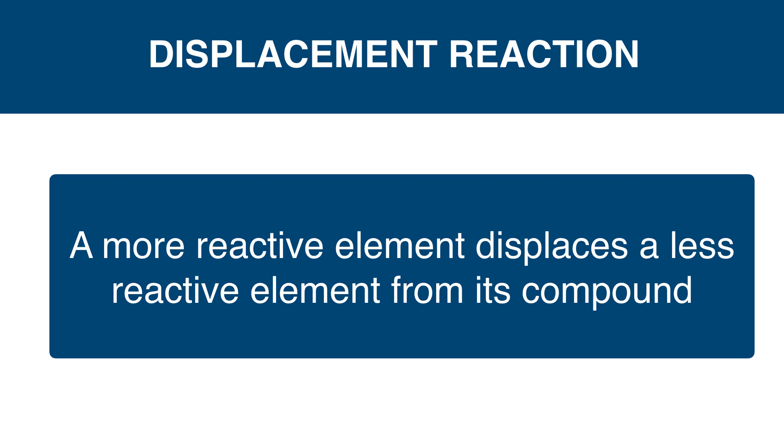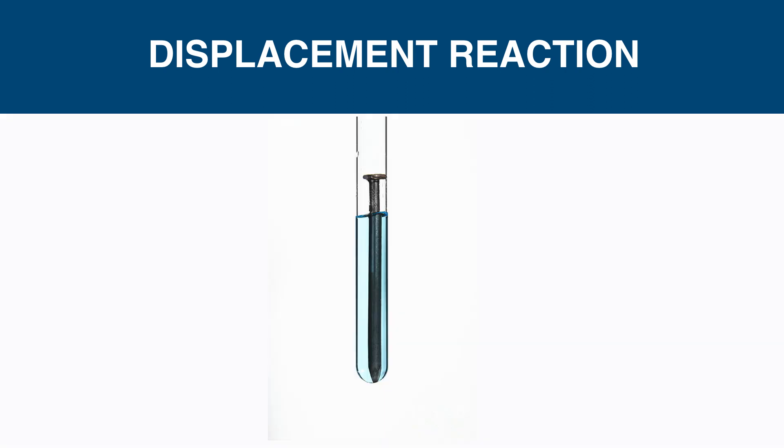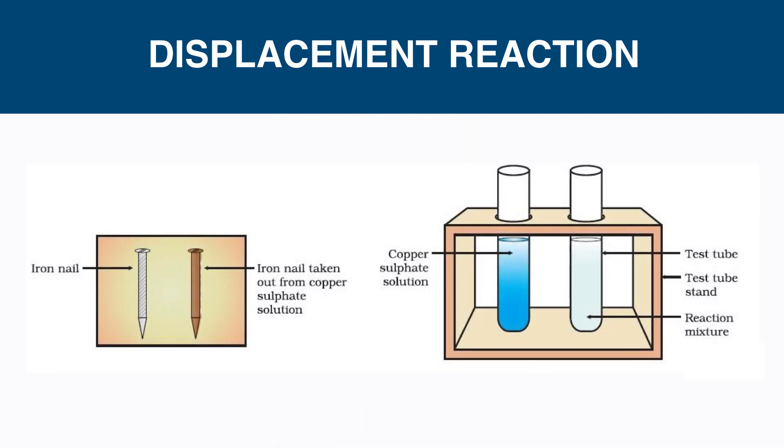The third type of chemical reaction is displacement reaction. It means the most reactive metal displaces the least reactive metal from its compound. Let's go through an experiment: an iron nail is dipped in copper sulfate solution. After some time, we can observe that the iron nail is coated by copper metal. The color of the iron nail and the solution has changed.